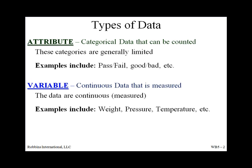The other data type is variables. This is referred to as continuous, as the possibility of this measurable data can be infinite. Height and weight are two types of variables data. Let's take a short quiz to get a better understanding of this important difference.